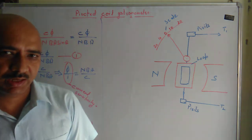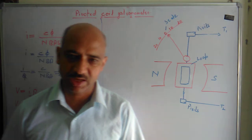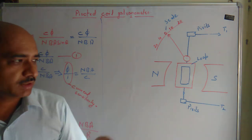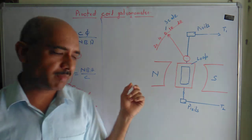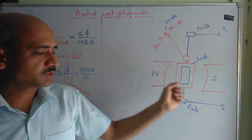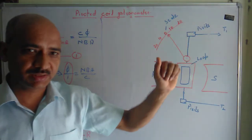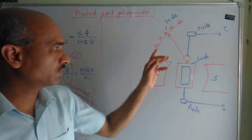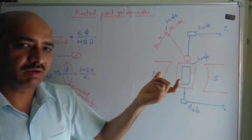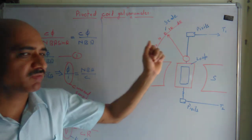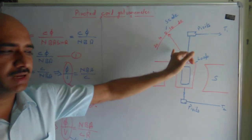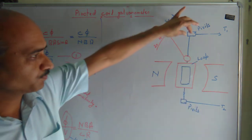Now moving to the pivoted type galvanometer. Its construction and working is the same as the suspended type galvanometer. We have a permanent magnet which creates a magnetic field, a current-carrying loop through which current flows, and two terminals. In the suspended type we used a mirror and reflection to get a reading, but in the pivoted type we use a scale and directly a needle.